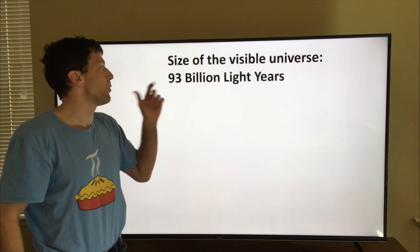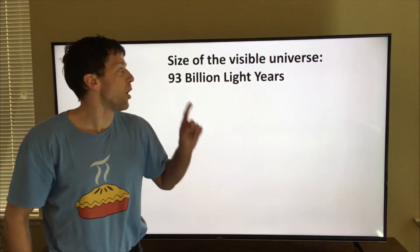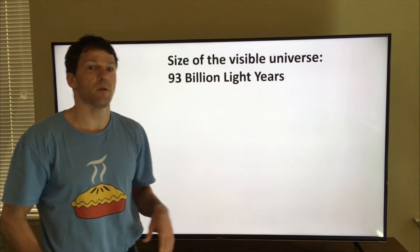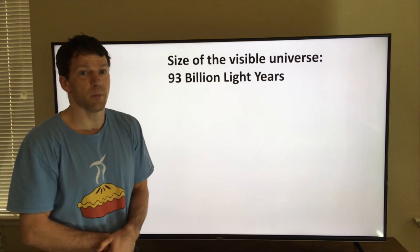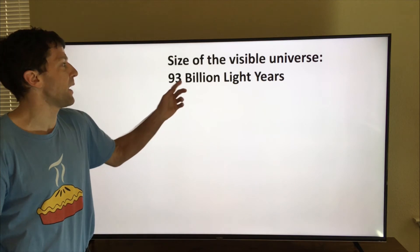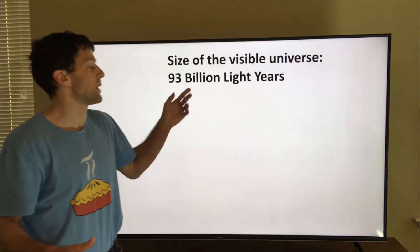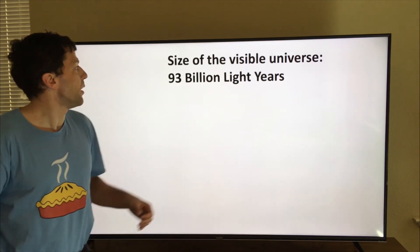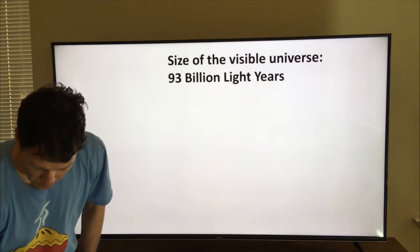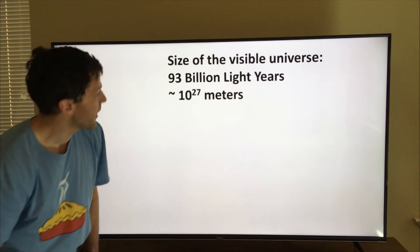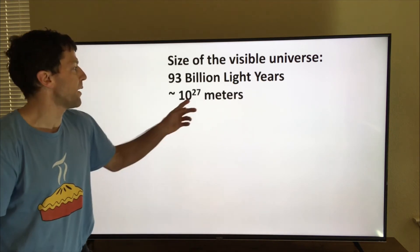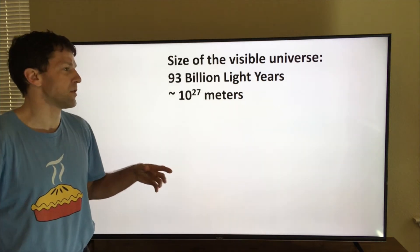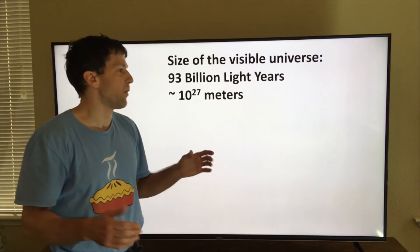The size of the visible universe is 93 billion light years. But you might say, hold on a minute, the age of the universe is 13.8 billion years, so therefore the diameter of the universe should be 28 billion light years. So how do we get 93 billion light years for the size? And that's because the universe itself is expanding. And 93 billion light years is about 10 to the 27th meters. So if we had 27 decimal digits of pi, we'd be able to calculate the circumference of the visible universe to within a meter.